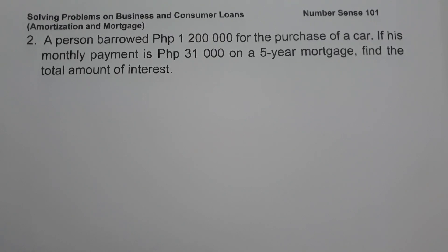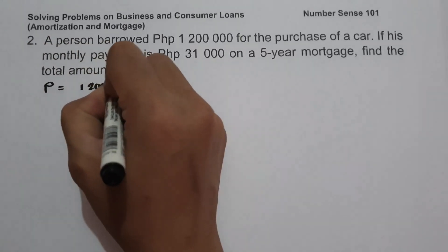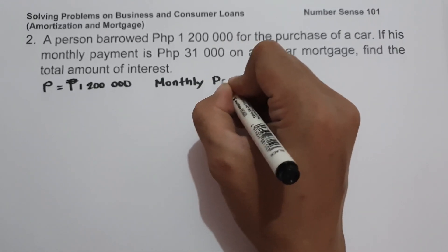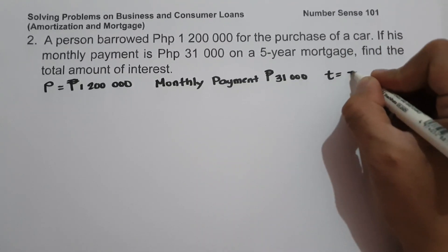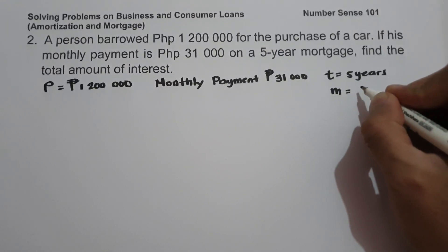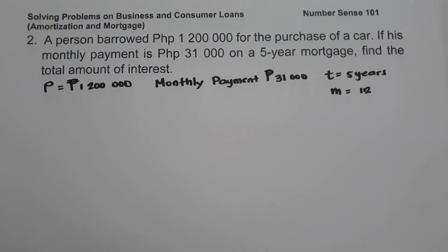Example 2: A person borrowed 1,200,000 pesos for the purchase of a car. The monthly payment is 31,000 pesos on a five-year mortgage. Find the total amount of interest. Let us identify the given: principal = 1.2 million pesos, monthly payment = 31,000 pesos, time = 5 years, and number of conversion periods = 12 (monthly). First, let's find the total amount paid.